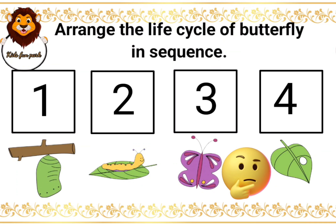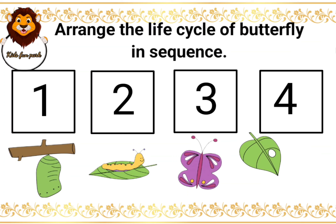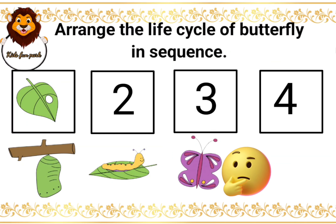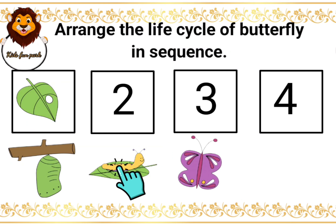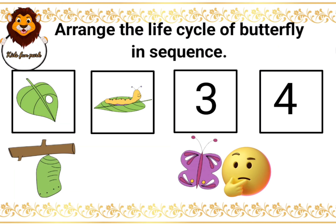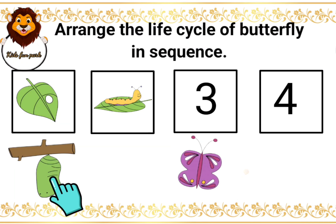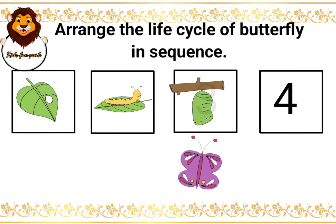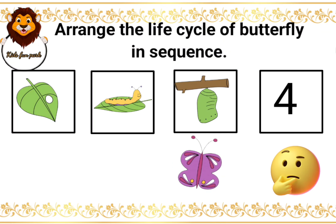The first stage is egg. The second stage is caterpillar. The third stage is pupa. The fourth stage is butterfly.